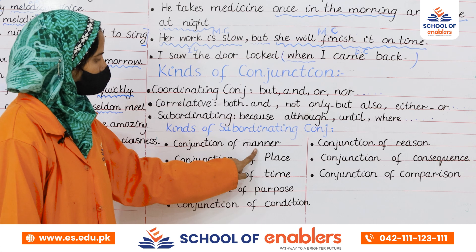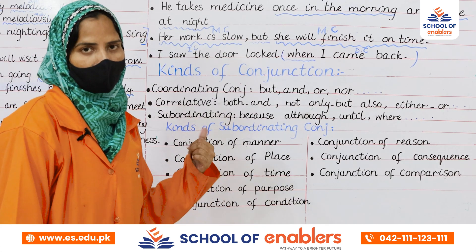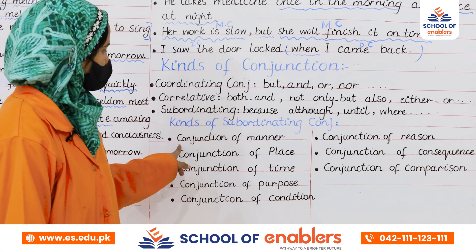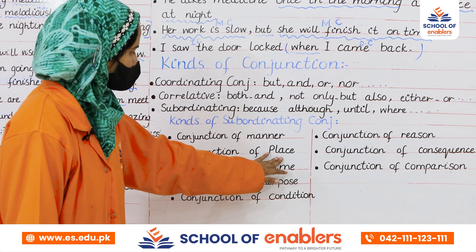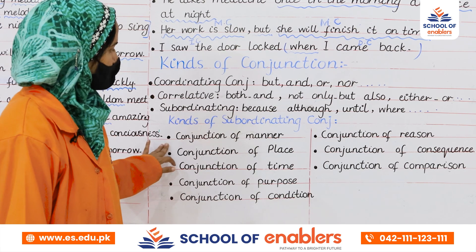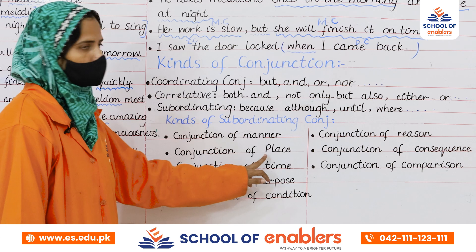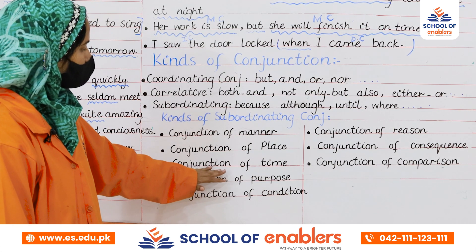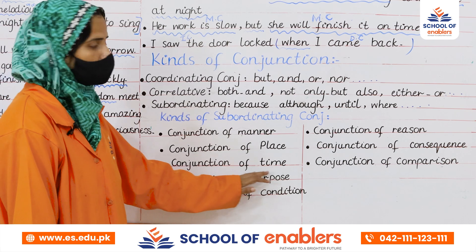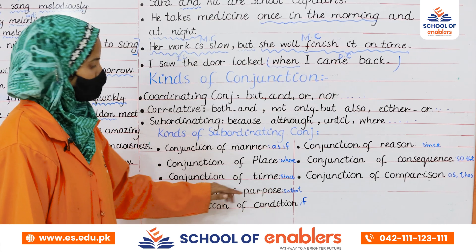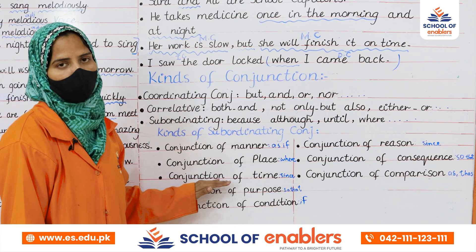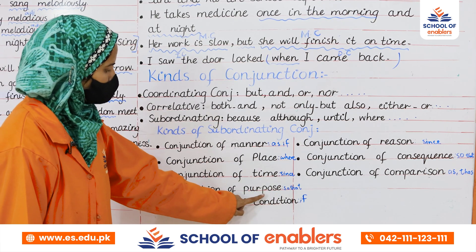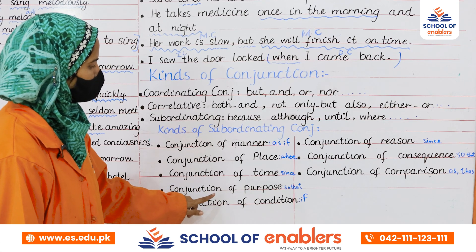Conjunction of manner: conjunctions used to introduce the adverb clause of manner. Conjunction of place: words used to introduce the adverb clause of place. Conjunction of time: words used to introduce the adverb clause of time — as the name suggests, like 'since.'